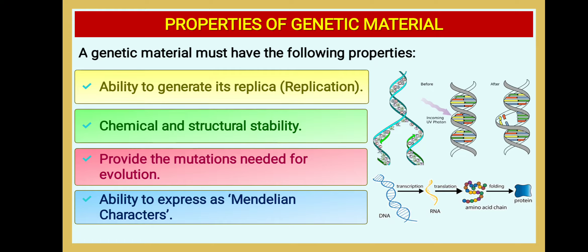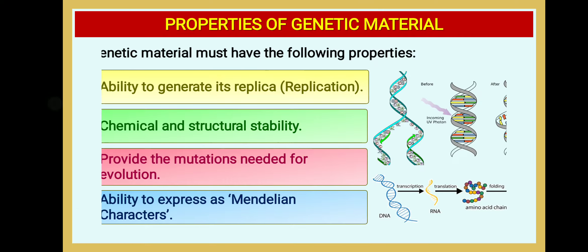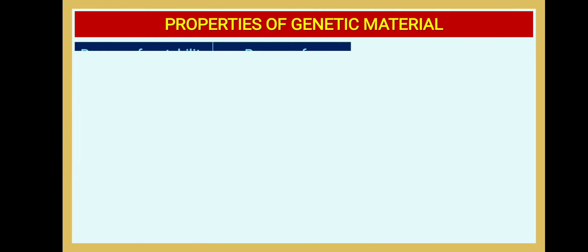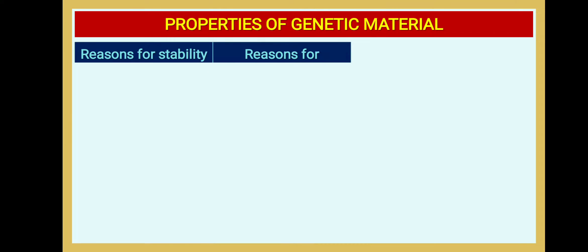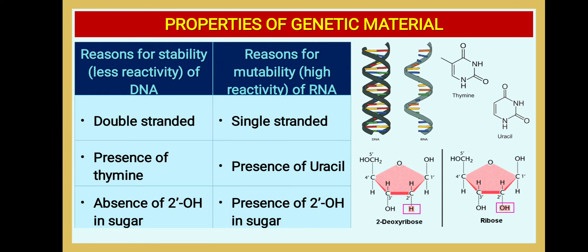The properties are: self-replicating, chemical and structural stability, providing mutations needed for evolution, and ability to express as a Mendelian character. Nature selected DNA as a better genetic material than RNA because the double-stranded nature of DNA makes it stable.